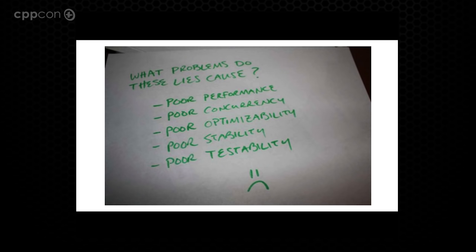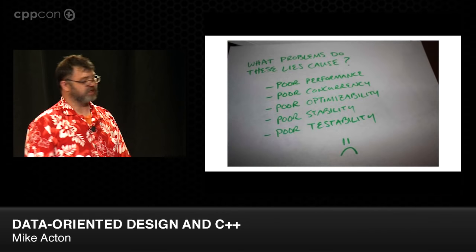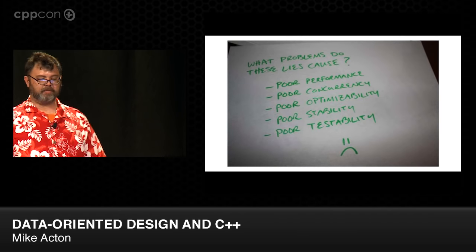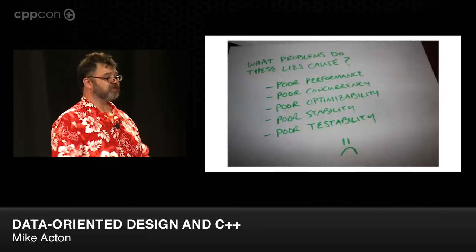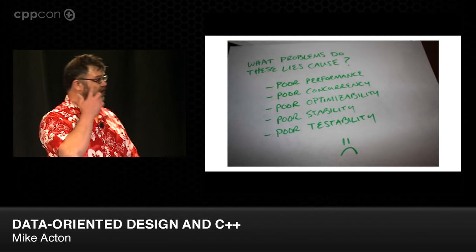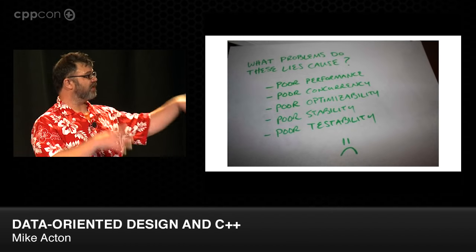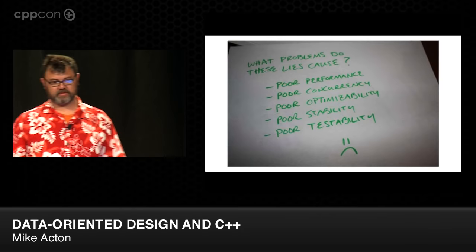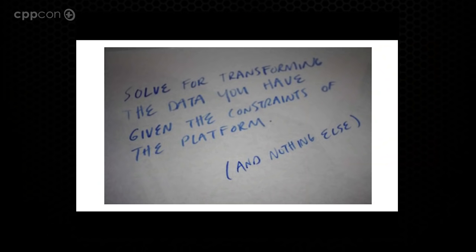So what problems do these lies cause? Generally the things you'll see are poor performance, poor concurrency, poor optimizability, poor stability, poor testability. We build up all this other infrastructure on top in order to try to solve problems we've created for ourselves. So: solve for transforming the data that you have, given the constraints of the platform, and nothing else. Just do that.